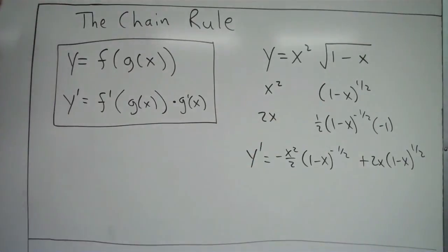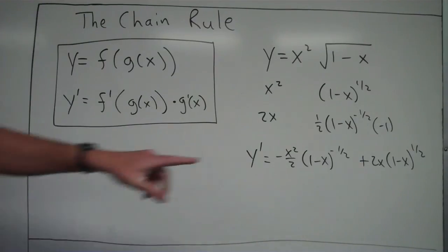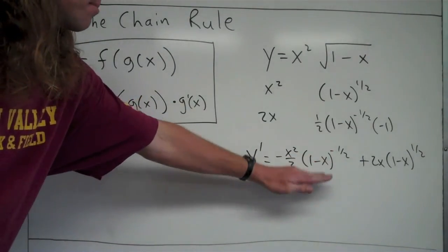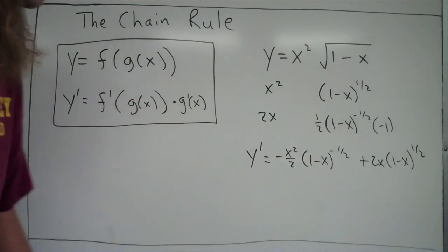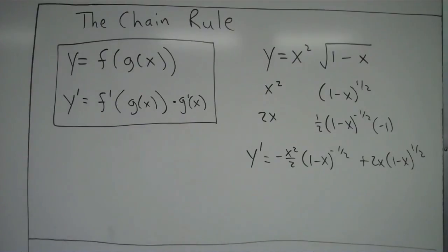For this purpose I'll leave it like that. You could simplify further by rewriting the negative exponent on the bottom and finding a common denominator, but the focus here was on applying the chain rule.